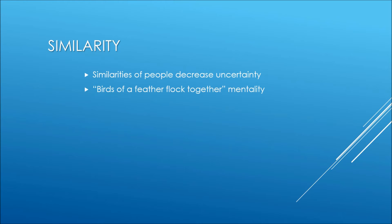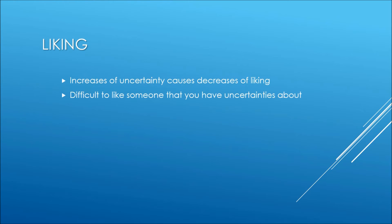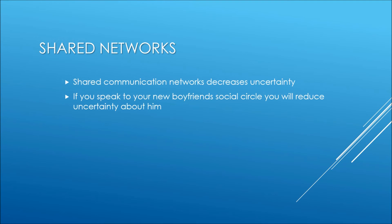The sixth axiom is similarity. Similarities between people decrease uncertainty — a 'birds of a feather flock together' mentality. Seventh is liking: increases of uncertainty cause decreases of liking, as it is difficult to like someone you have uncertainties about. Lastly, shared networks: shared communication networks decrease uncertainty. For example, if you speak to your new boyfriend's social circle, you will reduce uncertainty about him.